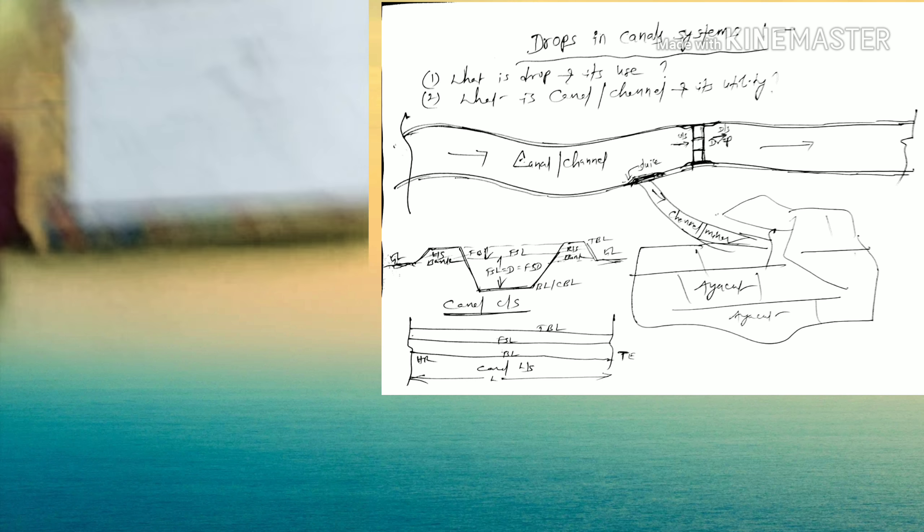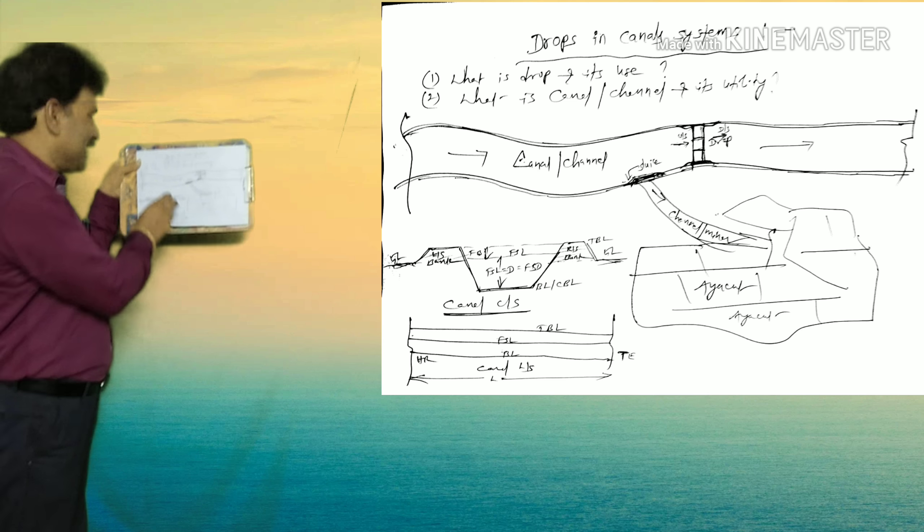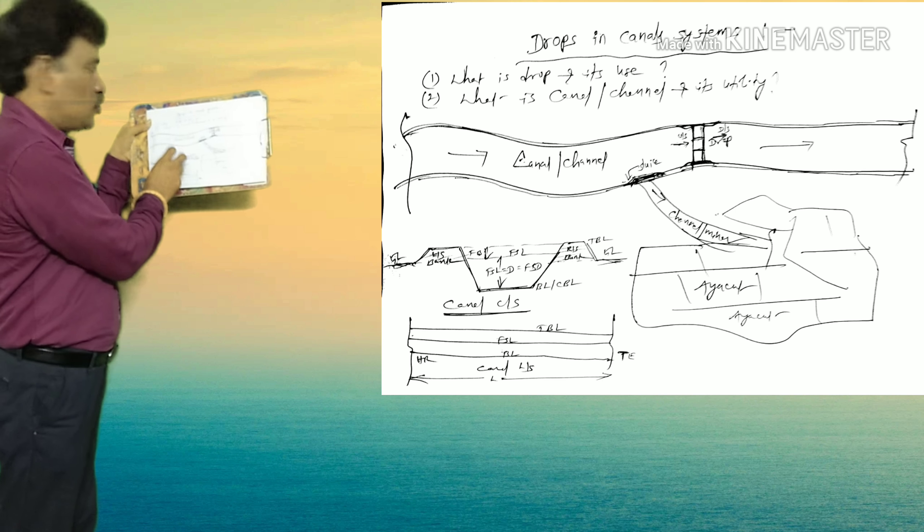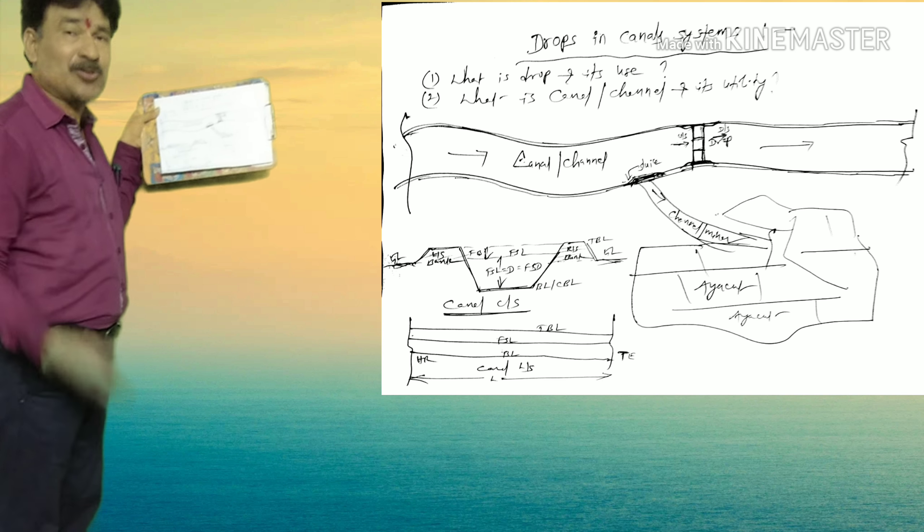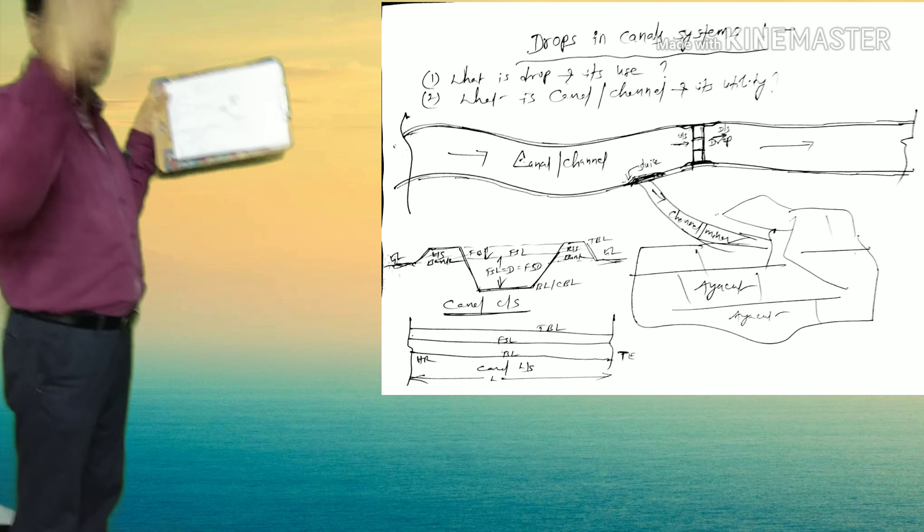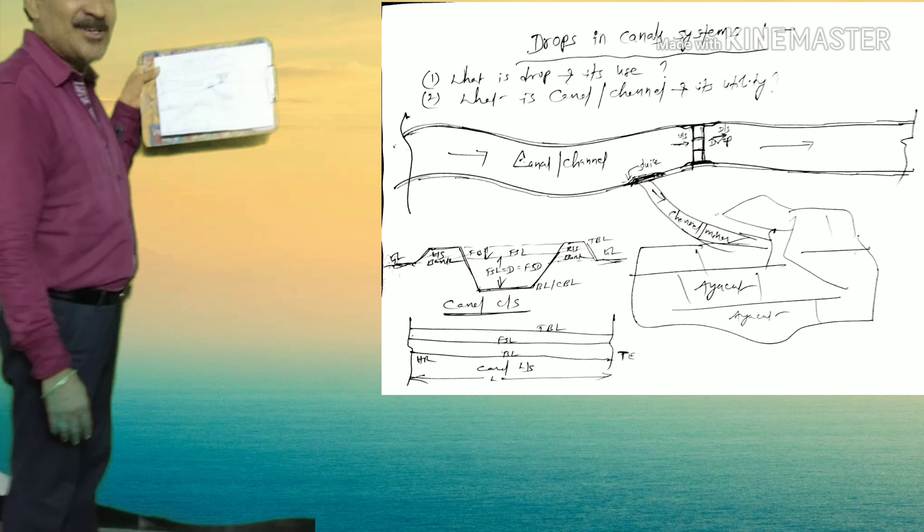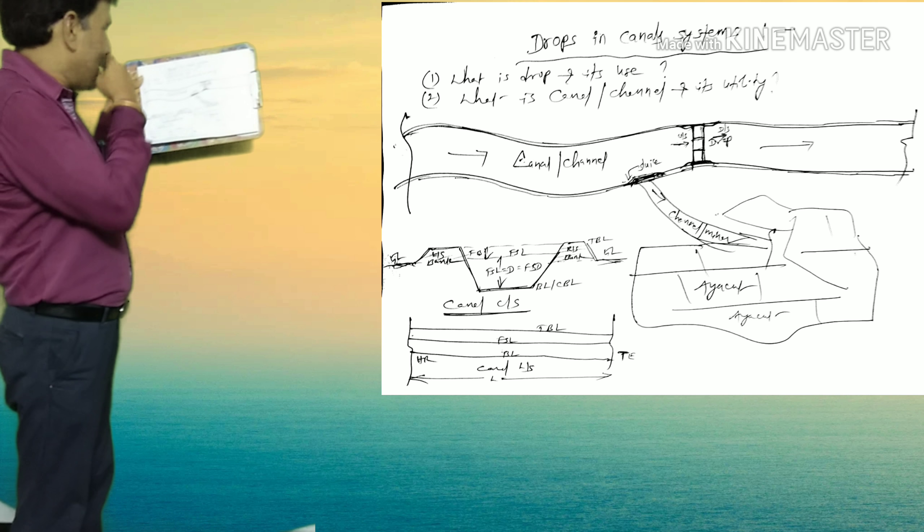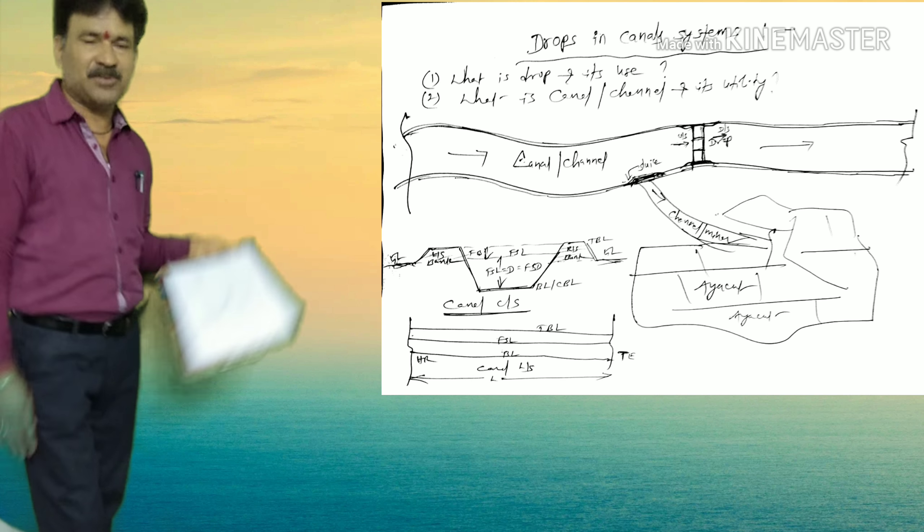So, levels are very, very important to maintain its gradient, its slope. Without slope, what happens, the water flows in reverse direction. So, levels are very important. And here friends, this is about drops.